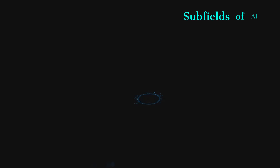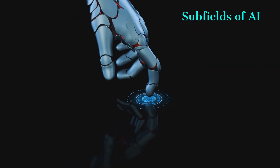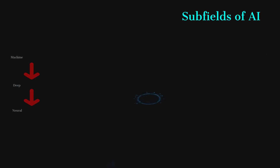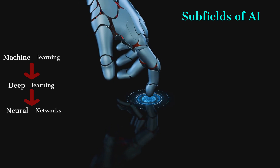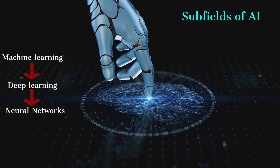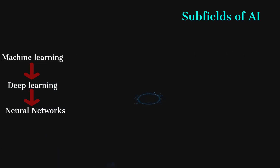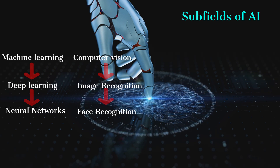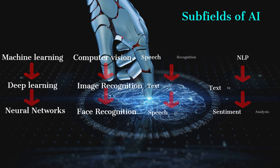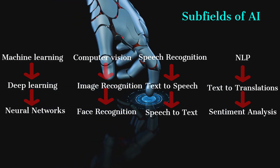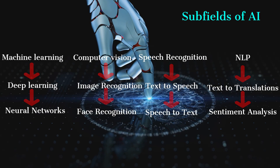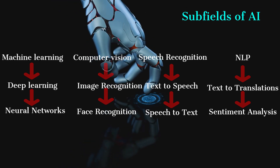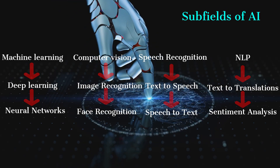Sub-fields of AI is the most important topic as part of artificial intelligence. The first one is machine learning, and its sub-domain is deep learning, and deep learning's sub-domain is neural network. The second one is computer vision, and its sub-domain is image and facial recognition. Speech recognition has text-to-speech and speech-to-text as sub-domains. Lastly, NLP — natural language processing — has text translation and sentiment analysis as sub-domains.